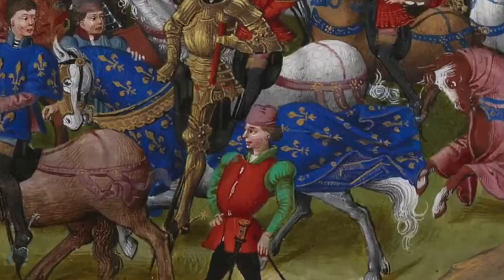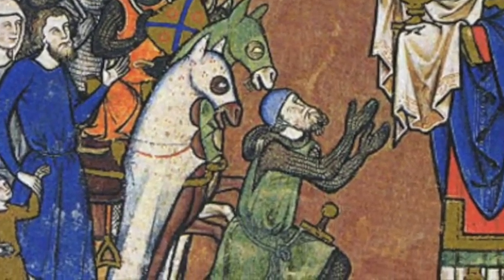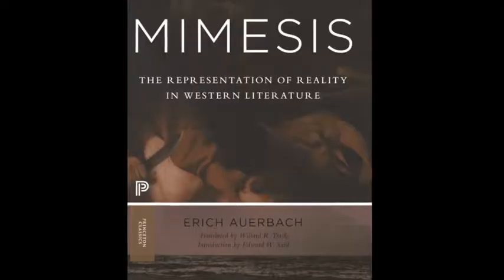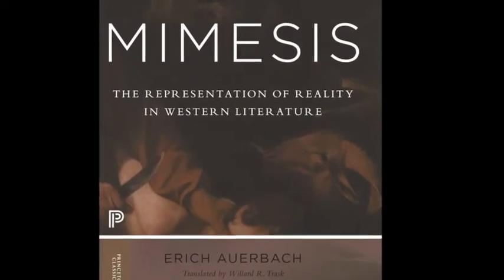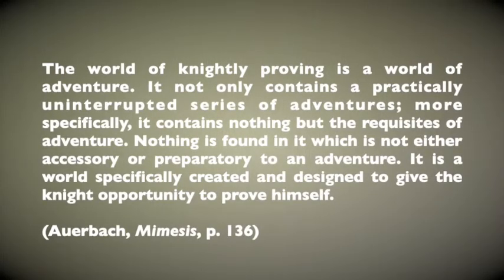But he rarely has the opportunity to decide how events themselves fall to him. So there's an interesting sense here of story shaping the hero rather than the hero shaping the story, and that might seem to cut knights down to size somewhat, but story and hero are very interdependent in romance. Romance settings, after all, are positively engineered not just to test the hero but to prove him. Eric Auerbach summarises this very well — he notes the world of knightly proving is a world of adventure. It not only contains a practically uninterrupted series of adventures; more specifically it contains nothing but the requisites of adventure. Nothing is found in it which is not either accessory or preparatory to an adventure. It is a world specifically created and designed to give the knight opportunity to prove himself. So like Balin, the knight in your average romance has to accept the adventure that falls to him, seemingly by chance.